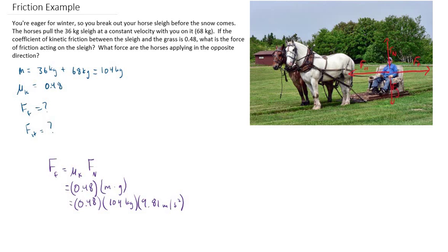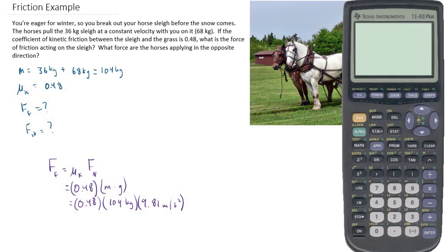We know that kg times m per second squared gives us newtons, which is the correct unit for force. That's our normal force. We multiply that by our coefficient of kinetic friction. So 0.48 times 104 times 9.81 gives us 489.7152.